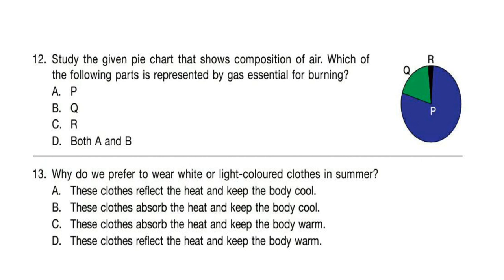Question 12: Study the given pie chart that shows the composition of air. Which of the following parts is represented by the gas essential for burning? Correct answer is option B. P represents nitrogen and Q represents oxygen, and oxygen is essential for burning.